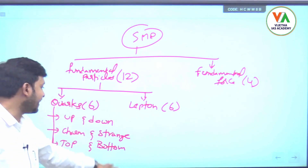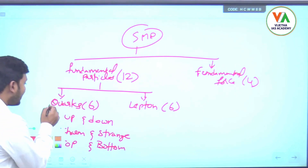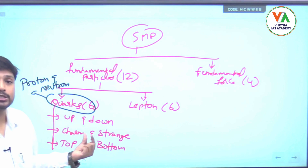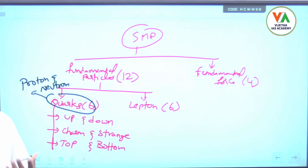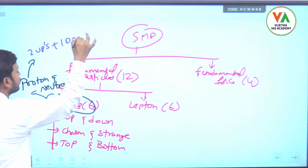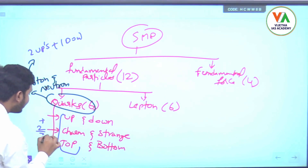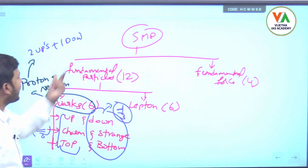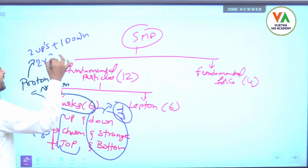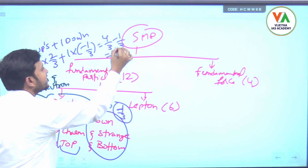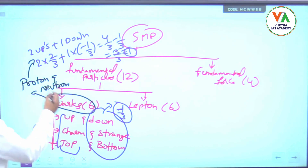These three groups of quarks have different charges. From these quarks, protons and neutrons are formed. For example, to calculate the charge of a proton, you need two ups and one down. Each up quark has a charge of +2/3 and each down quark has a charge of -1/3. So: 2×(2/3) + 1×(-1/3) = 4/3 - 1/3 = 3/3 = 1. This gives us the charge of the proton, which is +1.